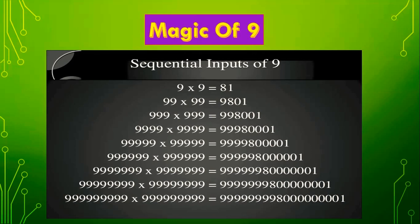Again, 9999 × 9999: in front of 8, three 9s are added, and in front of 1, three 0s are added. For the last term, the number formed by nine 9s multiplied by itself: in front of 8, eight 9s are added, and in front of 1, eight 0s are added. This is the sequential pattern of the number 9, and this pattern looks like a triangle.